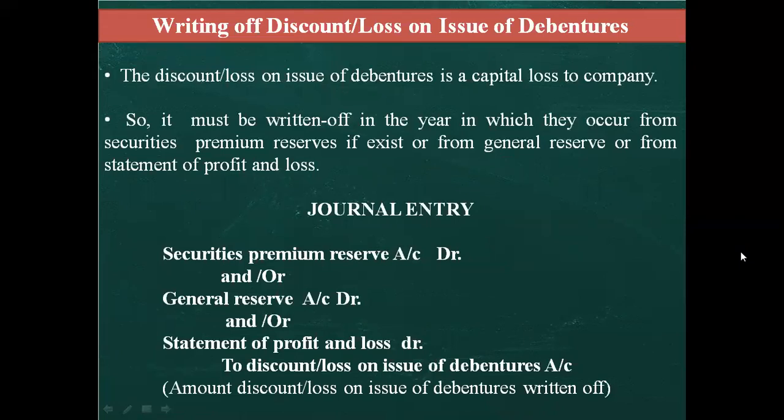Writing off discount or loss on issue of debentures: this is a capital loss and must be written off in the year it occurs. It is written off from Securities Premium Reserve (if available), or from General Reserve, or from the Statement of Profit and Loss. Journal entry: Securities Premium Reserve Account debit (or General Reserve Account debit, or Statement of Profit and Loss debit) to Discount/Loss on Issue of Debenture Account. Use whichever reserve is available in that order of preference.